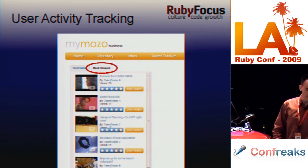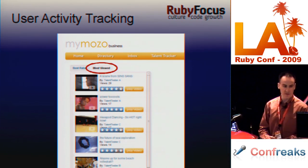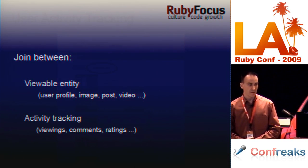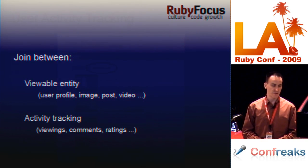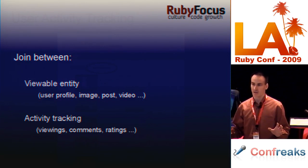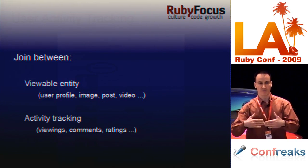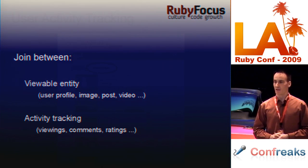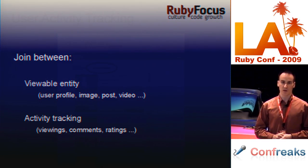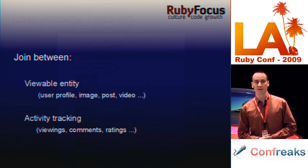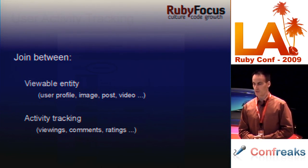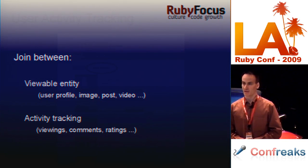This is a common problem in social networks and Rails applications. It's also a problem because it typically involves a join between the viewable entity — which could be the user profile or the image you posted — and the activity. These are two different tables usually, and you have to join those together to come up with a composite list of statistics, the analytics of it. Why is that a problem? Because it's slow. When people hit this tracker or analytics page, you need to access your database every single time, and your database will go to its knees very quickly.